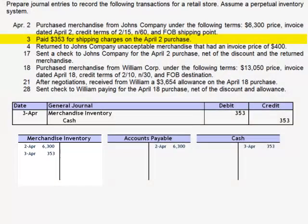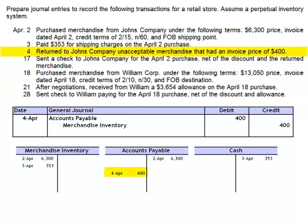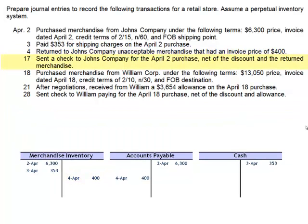April 4th: return to John's Company unacceptable merchandise that had an invoice price of $400. The journal entry decreases our liability, debiting accounts payable for $400, and reduces the amount of inventory, crediting the asset account merchandise inventory for $400.